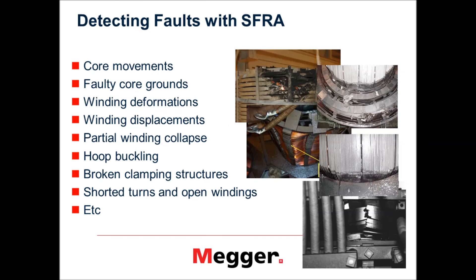With this SFRA method, you can pick up various different kinds of problems that may go unnoticed from other electrical tests. Problems like displacement of the windings, winding deformation, hoop buckling — which is one of the case studies we will talk about. Other problems like broken clamping structure, where if you don't have enough pressure on the winding, the winding would get loose. Problems related to the core of the transformer — shifting of the core, shorted laminations, or the core ground not connected properly. All those kinds of things you would be able to pick up with this SFRA test.